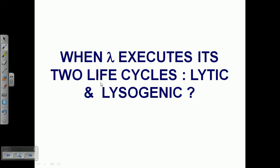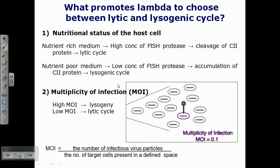The question remains: when lambda executes, does it follow the lytic or lysogenic life cycle? How do we figure that out? It usually depends on two major factors: one is the nutritional status of the host cell, and the second is the multiplicity of infection, or MOI.